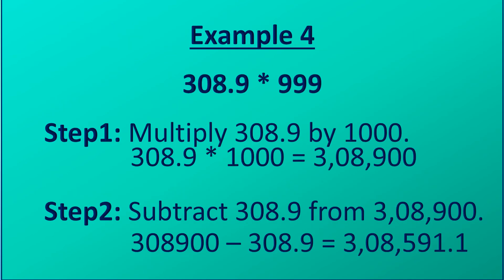We will see an example now. We will multiply 308.9 by 999. Step 1: multiply the given decimal number by 1000 — the answer is 308900. Step 2: subtract the same decimal number from the answer obtained in step 1. Get the final answer as shown in the presentation.